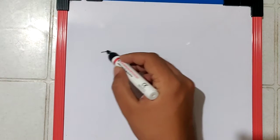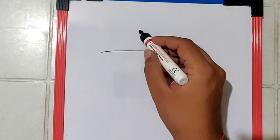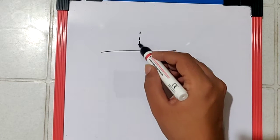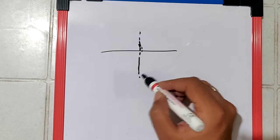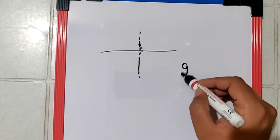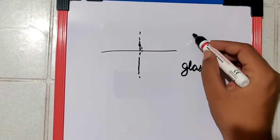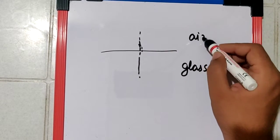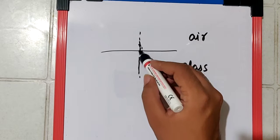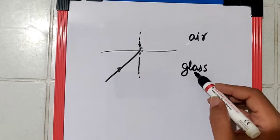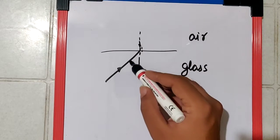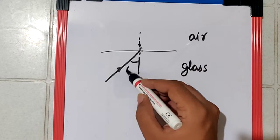When light travels from glass to air, the incident angle is theta1 and the refracted angle is theta2. This is glass and this is air, and the ray of light is travelling from glass to air, so this is theta1.